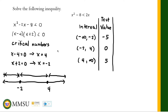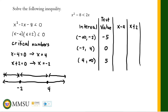Now we determine the signs of the factors. We have two factors: x minus 4 and x plus 2. When x equals negative 5: negative 5 minus 4 is negative, and negative 5 plus 2 is also negative. For the second interval when x equals 0: 0 minus 4 is negative, and 0 plus 2 is positive. For the third interval when x equals 5: 5 minus 4 is positive, and 5 plus 2 is also positive.